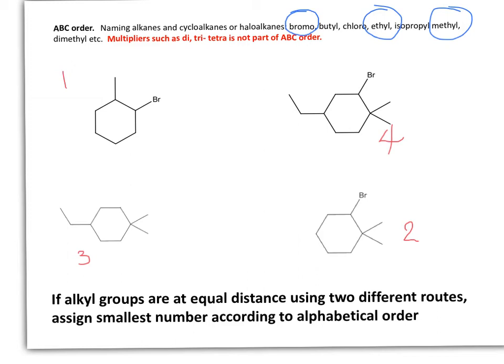This video is a continuation of the nomenclature of cycloalkanes. The first thing we observe is that all of these rings are the same size — cyclohexane with substituents. So all of them have a 6-carbon cycloalkane with alkyl groups.